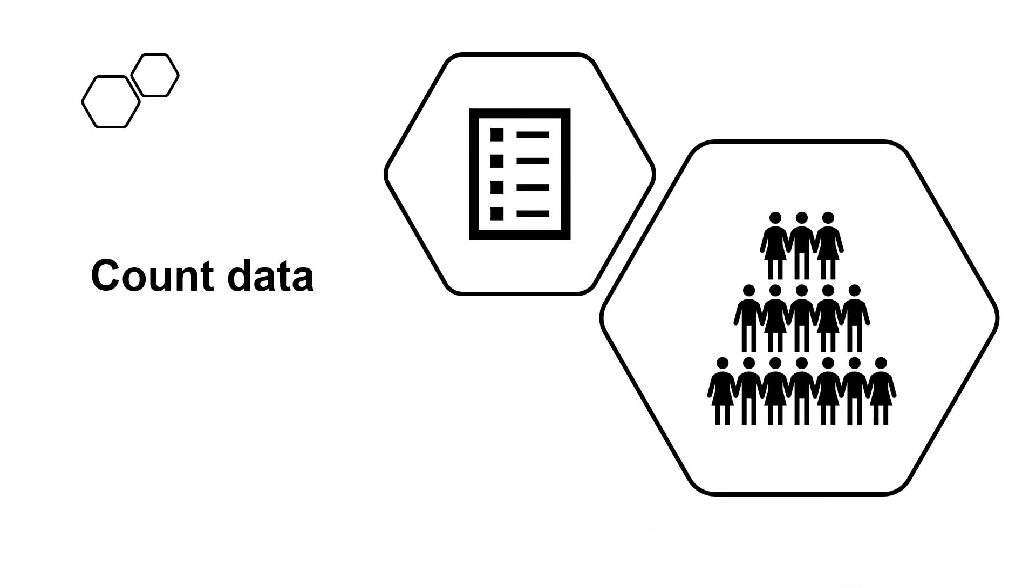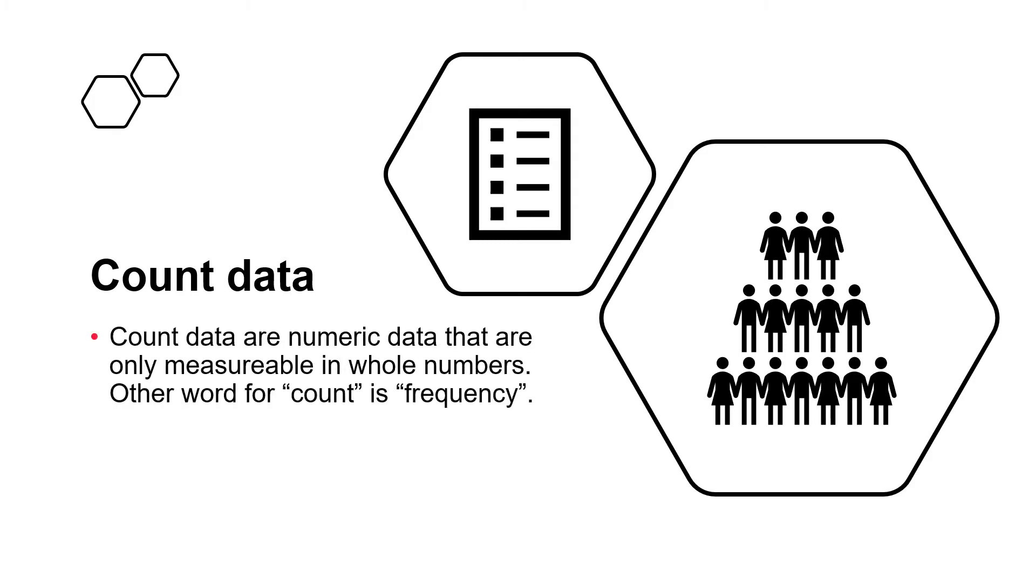Numeric data can also be called count data. Unlike continuous data, count data are numeric data that are only measurable in whole numbers. For example, we could count the number of people in a room or the number of yes/no answers in a survey.